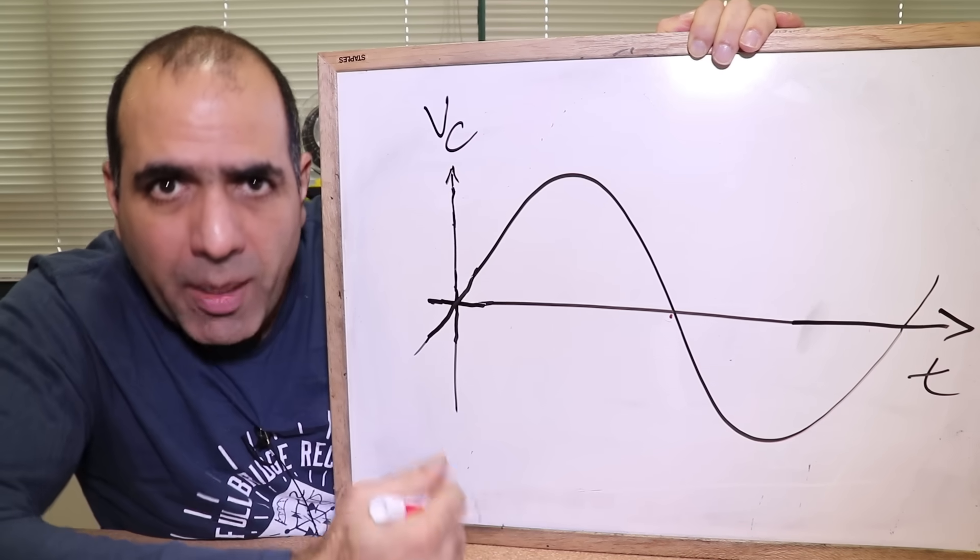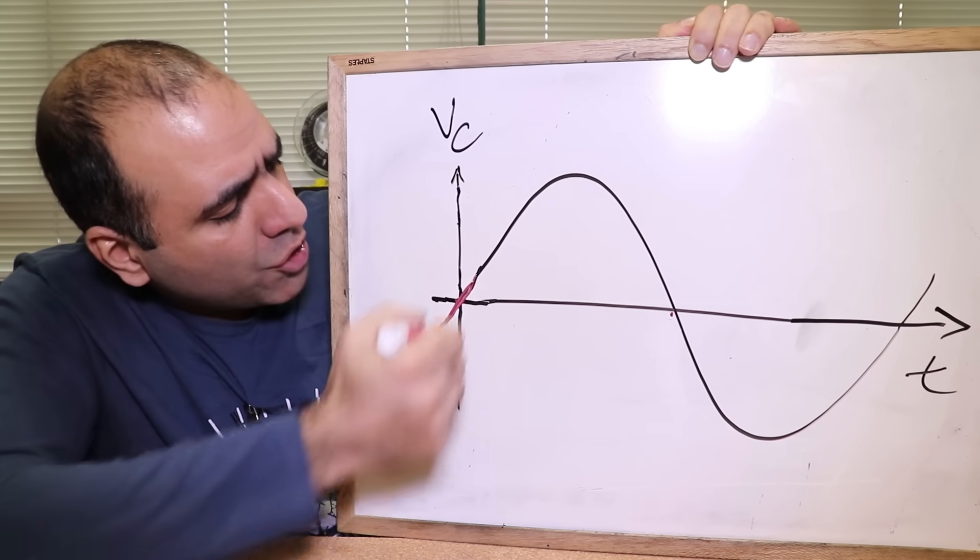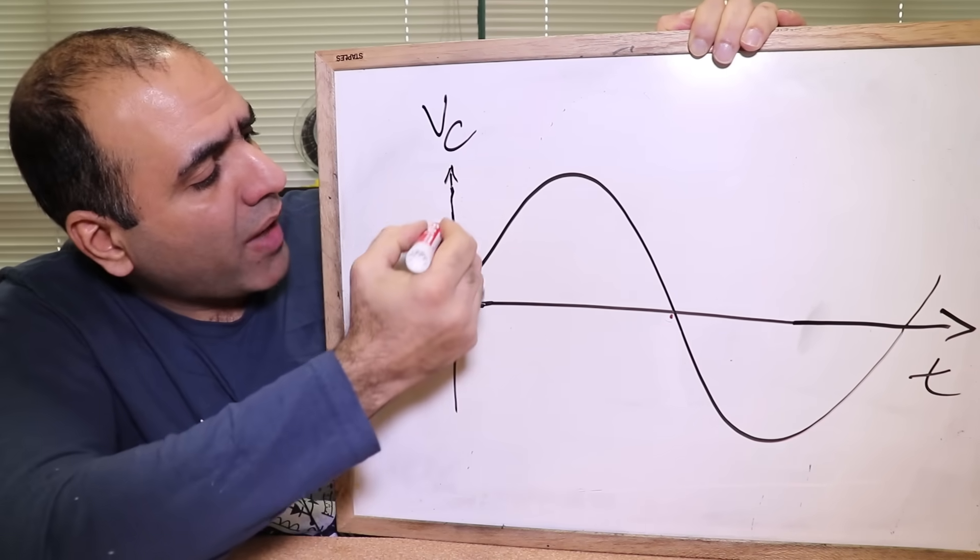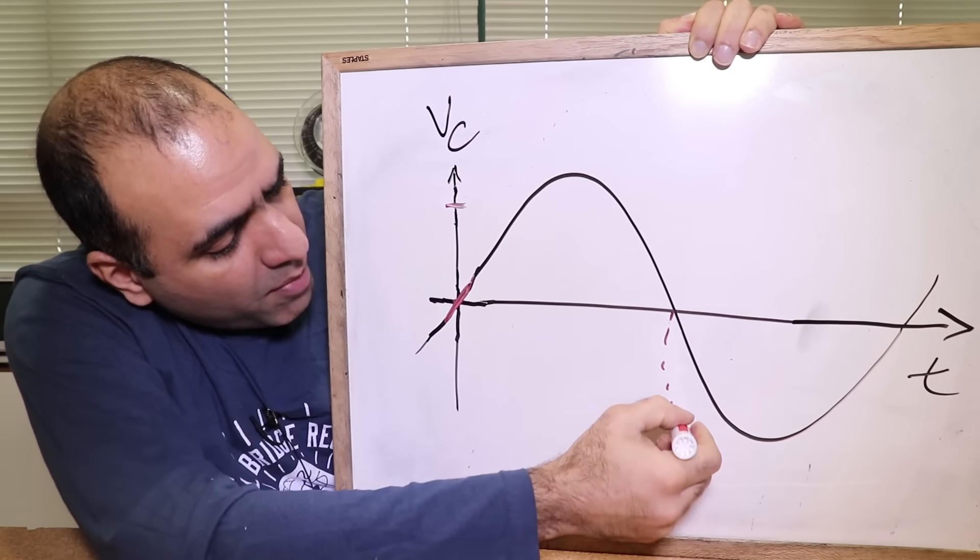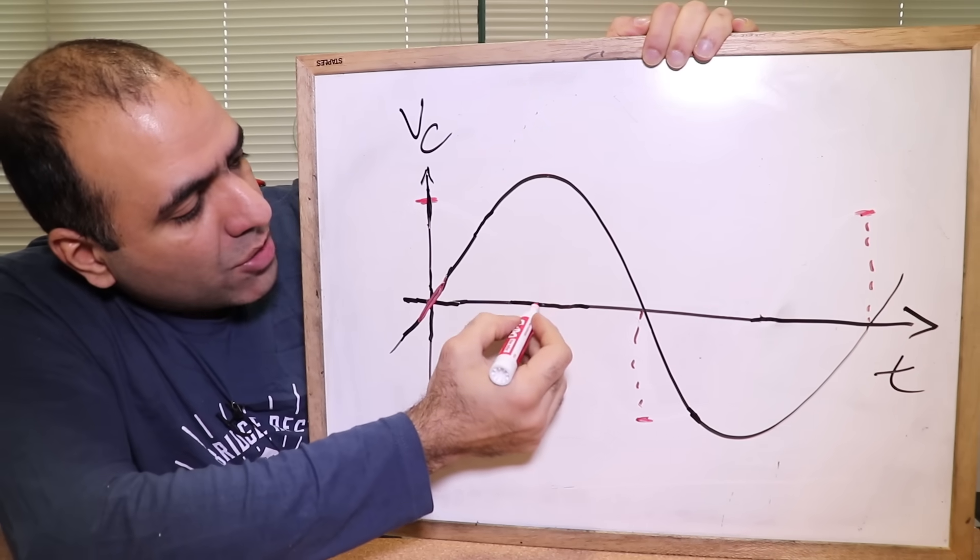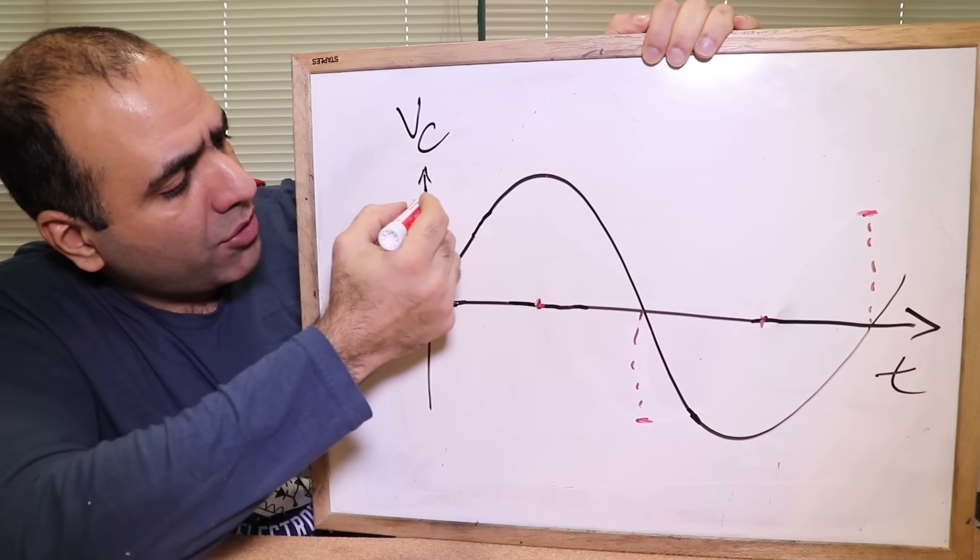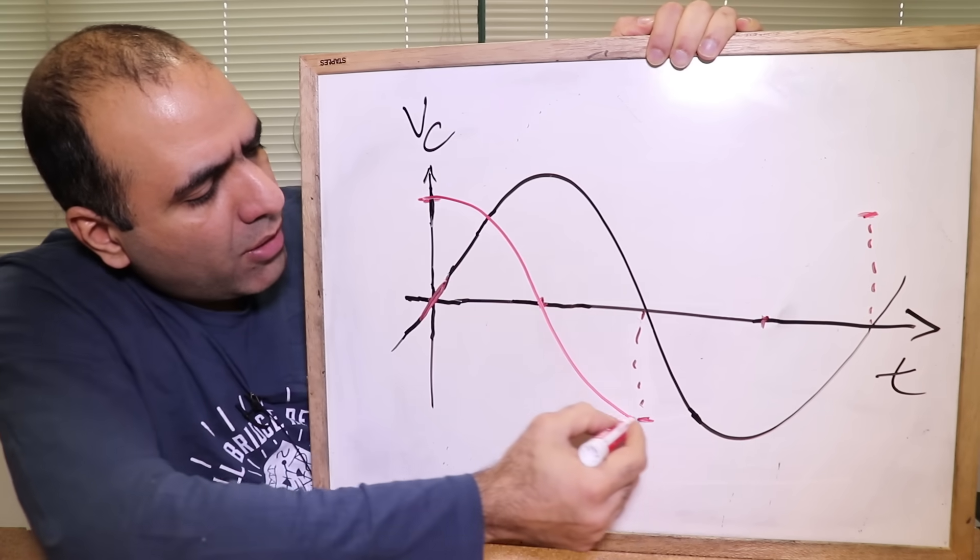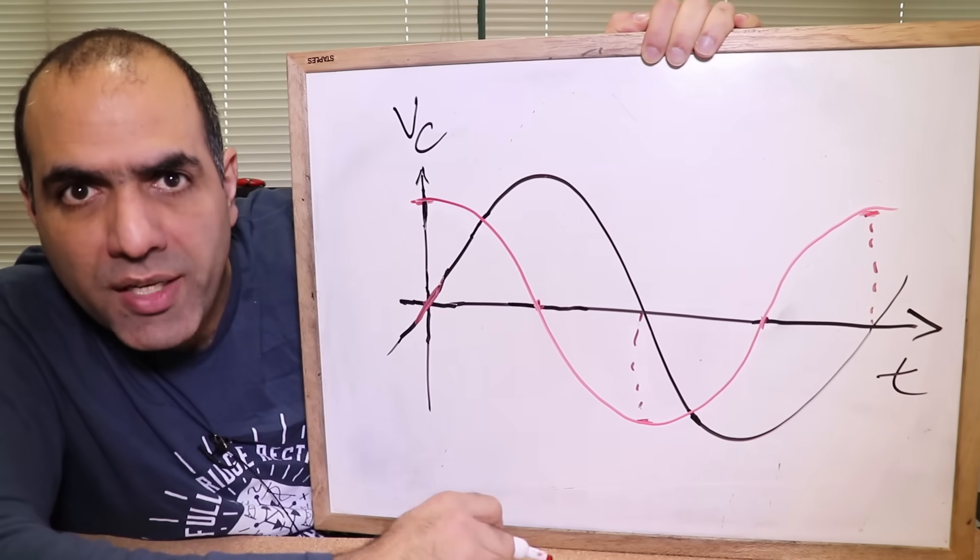If we have a sine wave voltage across a capacitor, then at zero crossing, we have the maximum voltage change. A positive rate here, so we have a peak current positive here. And here, we have a peak negative current. And at the peaks of voltage, the rate of voltage change is zero and so the current is zero in these spots. So the current through the capacitor looks like this, always leading the voltage by 90 degrees.